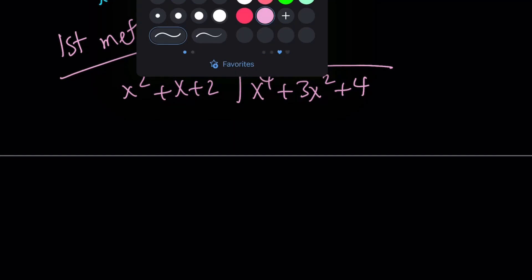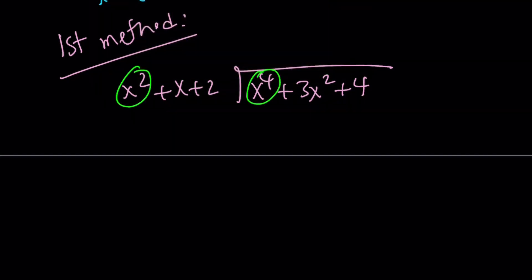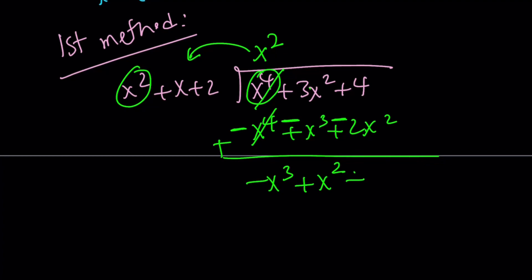In this division problem, we check the highest degree terms. x squared goes into x to the 4th x squared times, right? And then all we have to do is multiply the x squared by the divisor, and that's going to give us the answer. We're going to subtract it from that. So, just like division. Let's multiply by x squared. We're going to get x to the 4th plus x cubed plus 2x squared. And then what we have to do is negate the second polynomial and add, which means we're subtracting by adding the opposite. x to the 4 is going to cancel out. We're going to have negative x cubed. And 3x squared minus 2x squared is just going to be positive x squared. And now we're just going to bring down the 4.